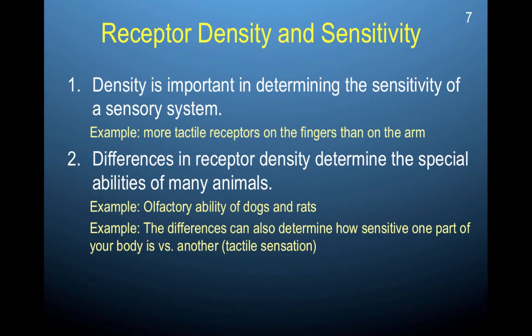An important aspect of sensing information from your environment is receptor density and sensitivity. Density is important for determining the sensitivity of a sensory system — the more dense the receptors, the more finely nuanced the information you're able to sense and perceive. For example, you have a very high receptor density for touch or mechanical energy in your lips, tongue, and fingers, but much lower on your back. So you can finely distinguish things with your fingers or your mouth, but the touch information on your back — if something touched your back — you wouldn't be able to tell a whole lot about it.